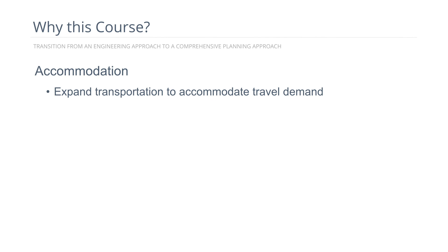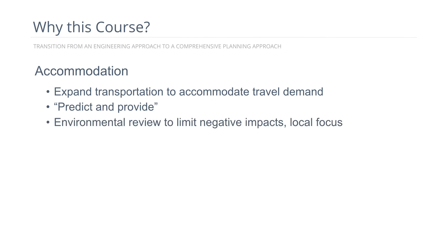This fits into the idea of predict and provide — that's the role of transportation planning. Environmental planning's job was to review, identify, and mitigate negative environmental effects. So in a way, it was like a band-aid on the wound rather than designing a transportation system that was sustainable. In this era, one would study and mitigate the after-effects of transportation systems.